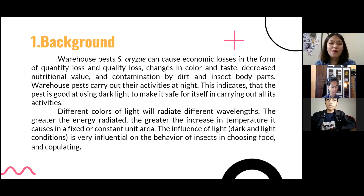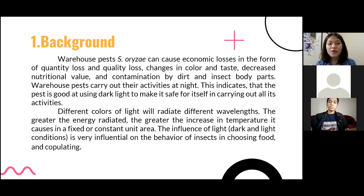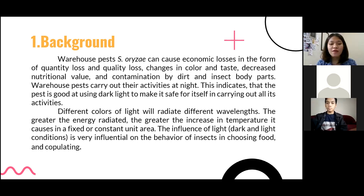The background of our presentation is that warehouse pests can cause economic losses in the form of quantity loss and quality loss, change in color and taste, decrease in nutritional value, and contamination by dirt and insect body parts. Warehouse pests carry out their activities at night, indicating they prefer dark conditions for safety and activity. Different colors of light radiate different wavelengths, and the greater the energy radiated, the greater the increase in temperature in a fixed unit area. The influence of light and dark conditions is very influential on the behavior of insects in choosing food and copulating.